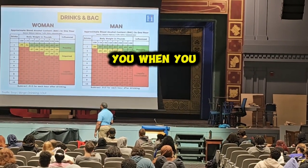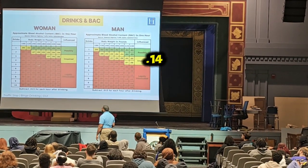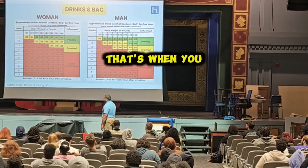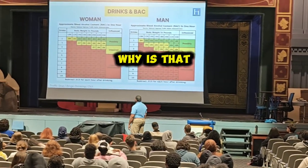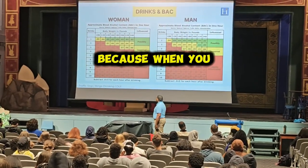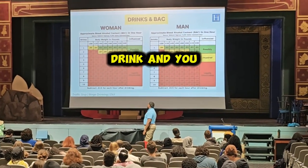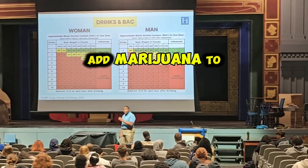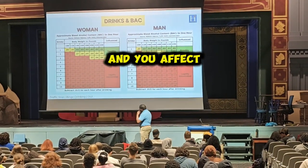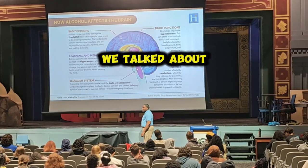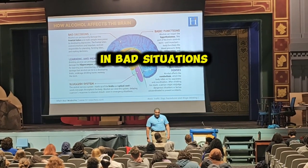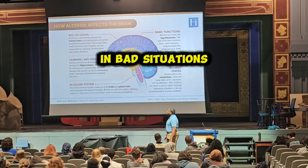And I told you, when you get to a 0.14, that's when you start not remembering things. Why is that important? Because when you drink and you add marijuana to it and you affect your brain like we talked about, you start to make bad decisions and put yourself in bad situations.